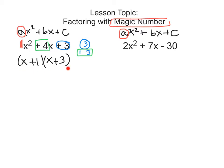If I were to FOIL this, I would get x squared right here, and then we have 3x plus 1x, which is 4x, and then plus 3. So we've done this before a couple of different times this year, and that is how we factor when a is 1.